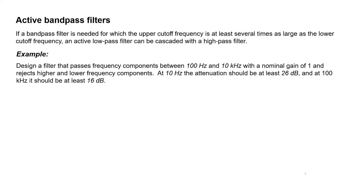Let's design a filter that passes frequency components between 100 Hz and 10 kHz. Now 100 Hz and 10 kHz are two decades apart, so that's reasonably far apart so that the two Sallen-Key segments won't interfere with one another's behavior. In this problem, we're going to have a nominal gain of 1.